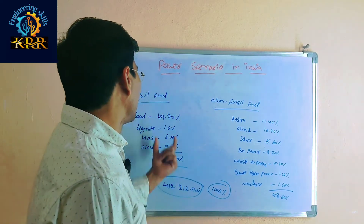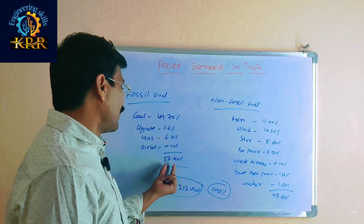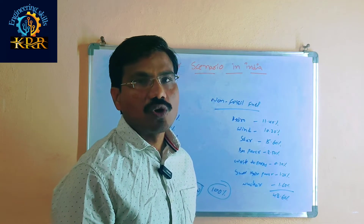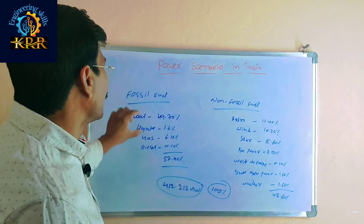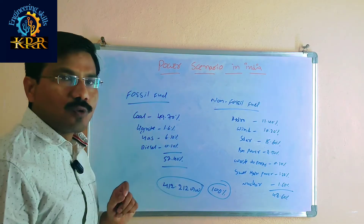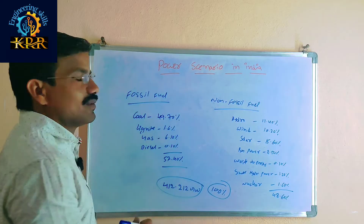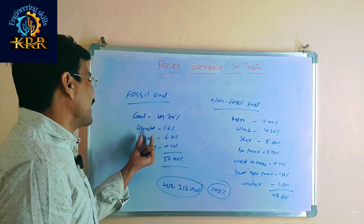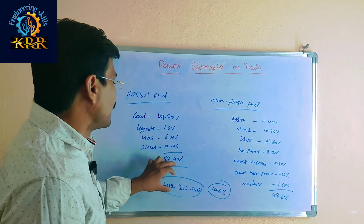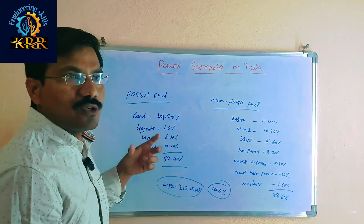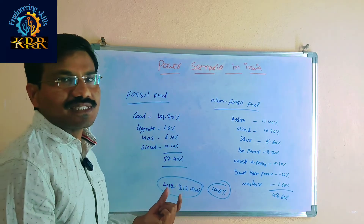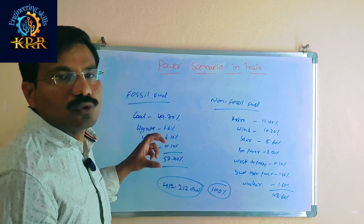We are using fossil fuel for 57.40% of power generation. In fossil fuel: coal accounts for 49.70%, lignite 1.60%, gas 6.10%, and diesel 0.10%, totaling 57.40%. We are using this fossil fuel to generate 57.40% of the power.